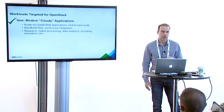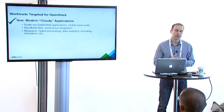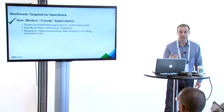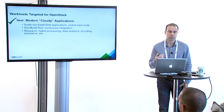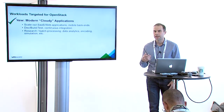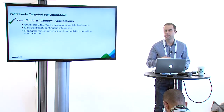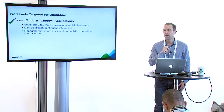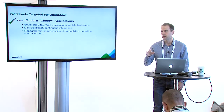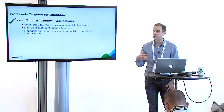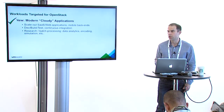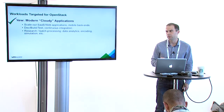The applications that get targeted for OpenStack are generally scale-out SaaS applications, web applications, and test-dev type workloads. These are the kind of applications that need a lot of agility — you're going to have code that deploys an application that needs to make changes a lot. You need to create VMs, tear them down, scale up, scale down. You need an agile API-driven infrastructure that allows you to make these changes quickly.